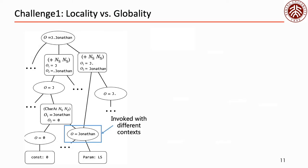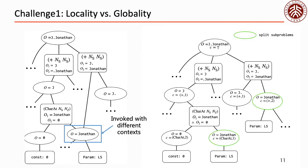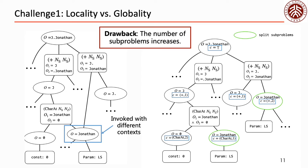Top-down prediction models can be easily captured by dynamic programming. The only thing we need to do is to add the context information into subproblems. As we can see from the modified search procedure, subproblem Jonathan splits into two subproblems with two different contexts. Such a split method has a drawback: it increases the number of subproblems, leading to potential inefficiency. We will discuss this point in the second challenge.